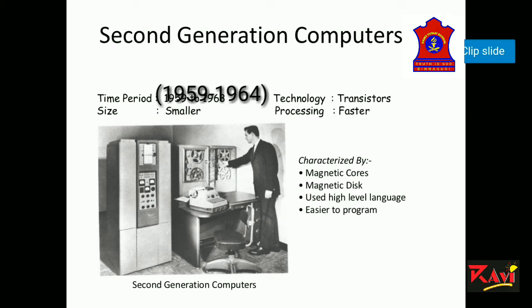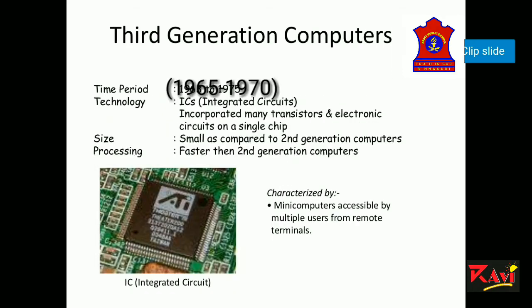Now let's learn about the third generation computer. The third generation computer started in the mid-1960s. The development of integrated circuits was a major breakthrough, resulting in the introduction of third generation computers. Transistors were replaced by integrated circuits, also known as semiconductor chips. Examples are IBM 360, ICL 1900, and CDC.